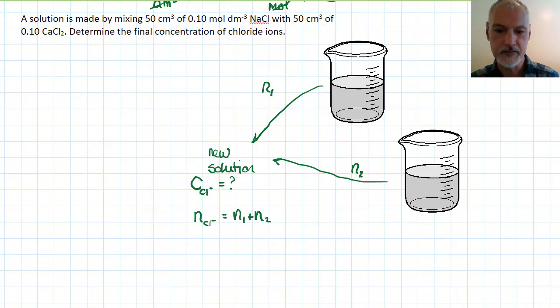Now the final volume of my solution - I'm going to be mixing these two volumes together, and if there's 50 cubic centimeters here and there's 50 cubic centimeters here, my final volume then is going to be 100 cubic centimeters.